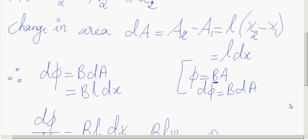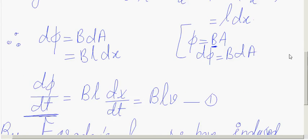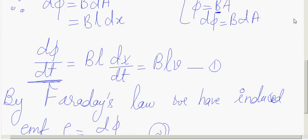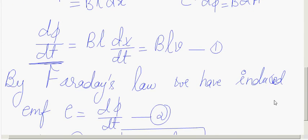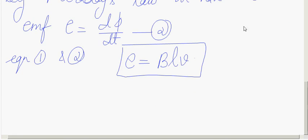According to Faraday's law, DΦ/DT gives the induced EMF. So E = BLV. If you have any doubt in deriving this, refer to the previous class where this equation is fully explained.